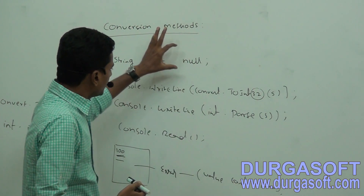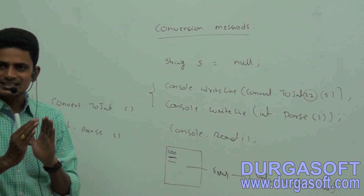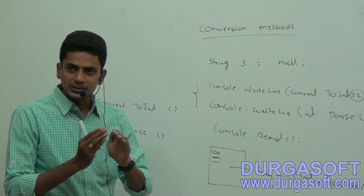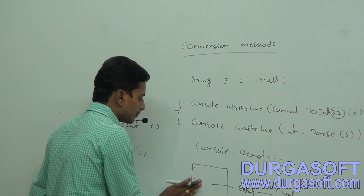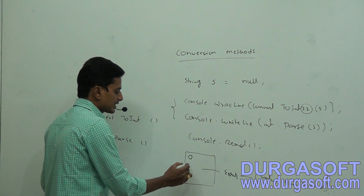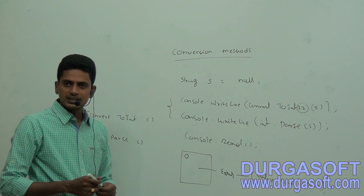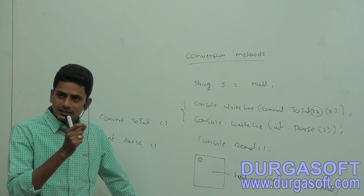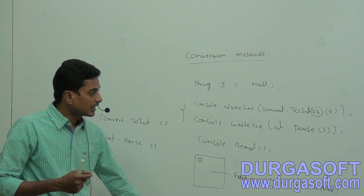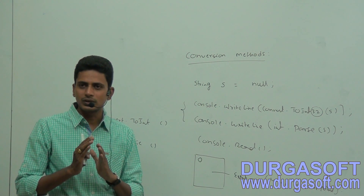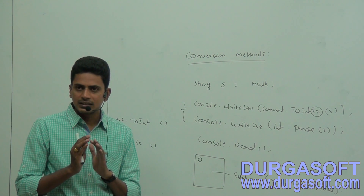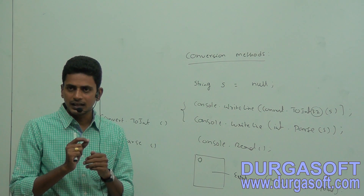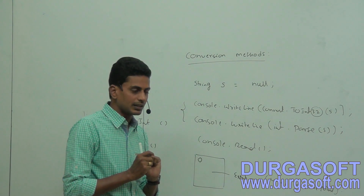If the value is null, int.Parse is not able to convert that null value to integer. But Convert.ToInt32 successfully converts null value to integer and returns 0. So the first statement gives 0 and the second statement gives the error 'Value cannot be null'. Convert.ToInt32 can handle both string-to-integer and null-to-integer conversion, while int.Parse can only convert string to integer — it cannot handle null values and raises an error.